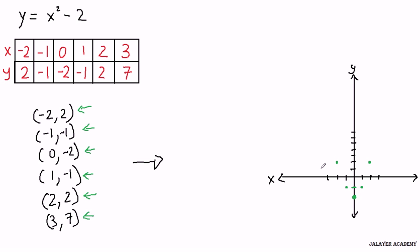And finally, our last point here, 3 comma 7. So we go over to the x direction positive 3 and up positive 7 in the y direction, which is right around here.